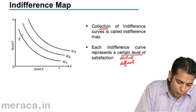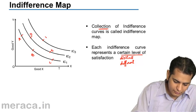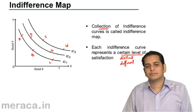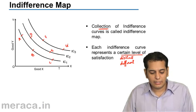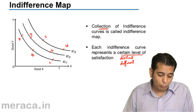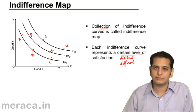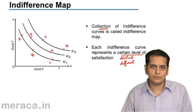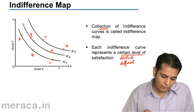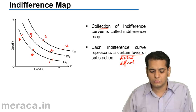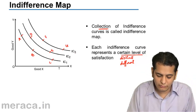Let's say there are points A, B, C, D, E, F, and G. Points A, B, and C give you the same level of satisfaction because they are on the same indifference curve. Likewise, D and E will give you the same level of satisfaction because they are on the same indifference curve IC2. And finally, F and G will also give you the same level of satisfaction because they are on the same indifference curve IC3.